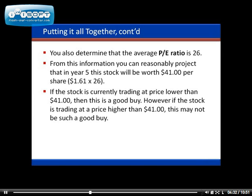Based on our projections — EPS of $1.61 and a P/E ratio of 26 — we come up with $41 per share after five years. Basically, if the stock is currently trading at a price lower than $41, then it is a good buy.